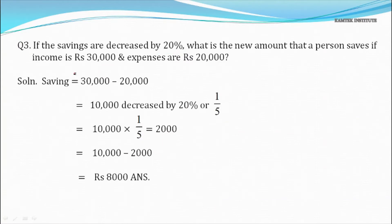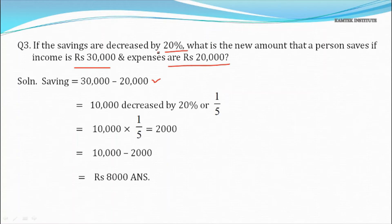Question 3: If savings decrease by 20%, what is the new amount saved if income is ₹30,000 and expenses are ₹20,000? Originally, savings = income − expenses = 30,000 − 20,000 = ₹10,000. There is a decrease of 20% on the original savings of ₹10,000. Converting 20% to a fraction gives 1/5.